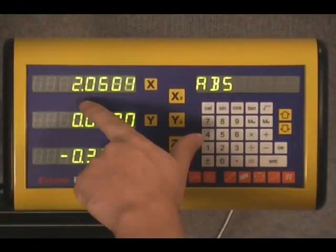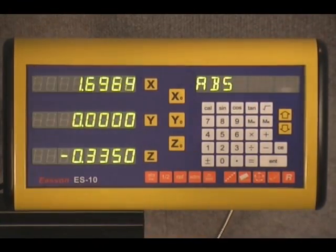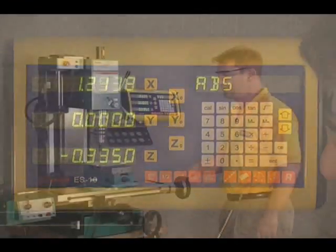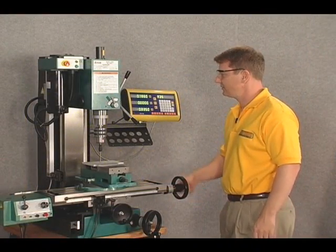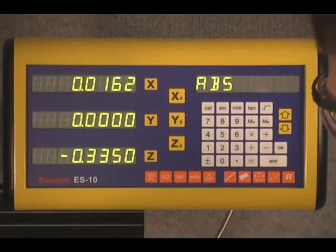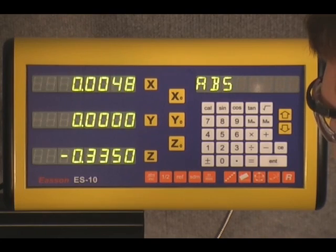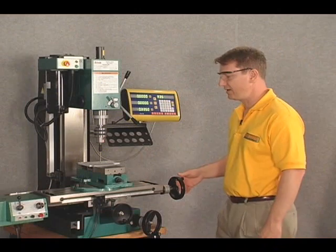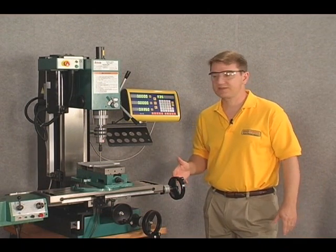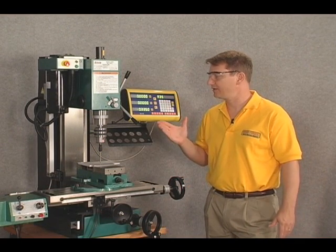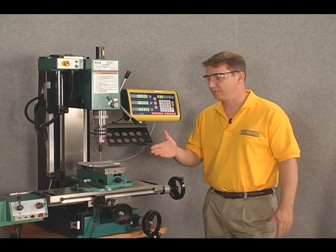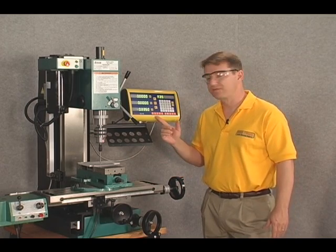I'm just going to simply move my machine over until the x-axis value reads exactly zero. As I get closer I slow down the movement a little bit here. See if I can get it. There we go. Okay. So now on the x-axis I have exactly found the center point of my workpiece using the center find feature.